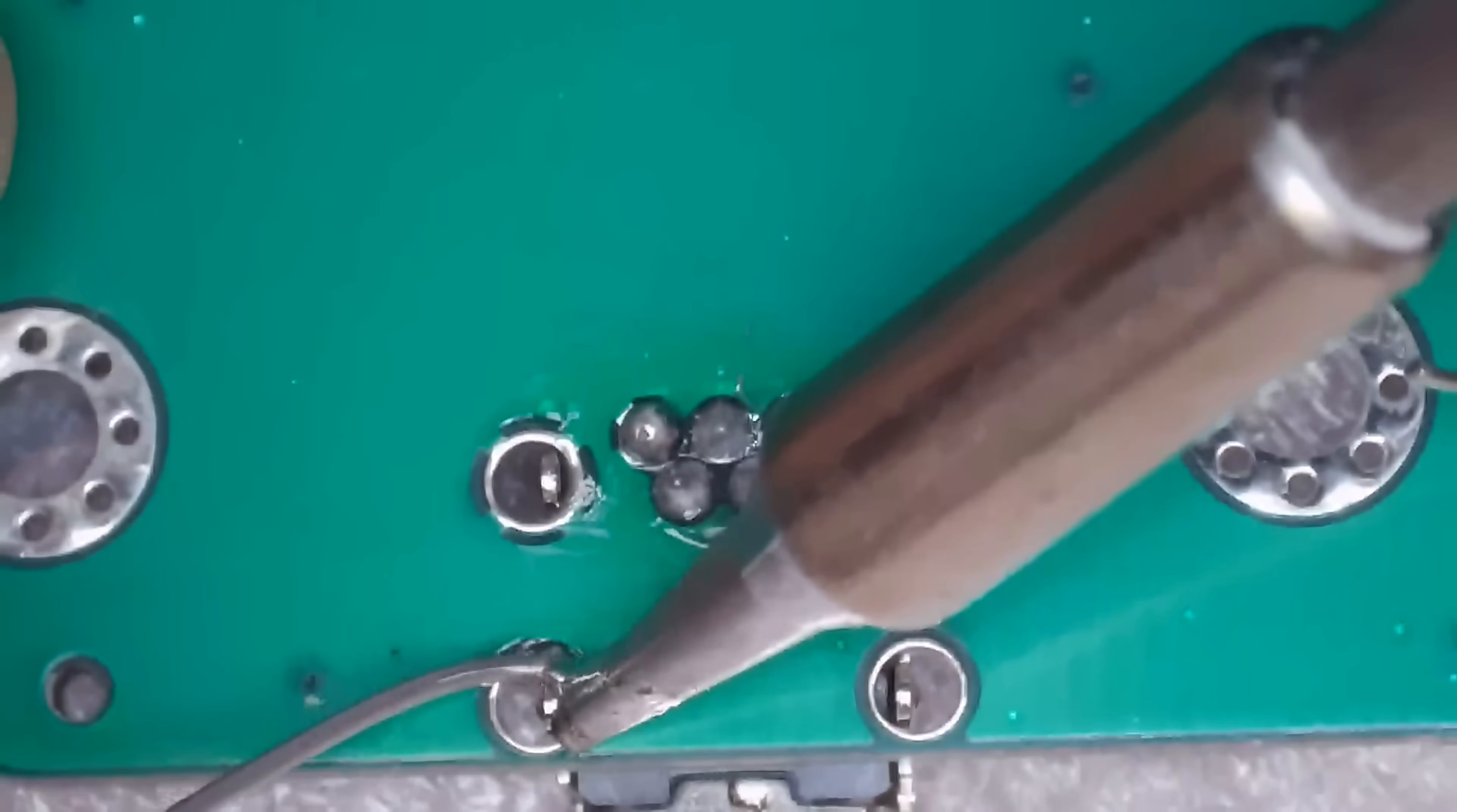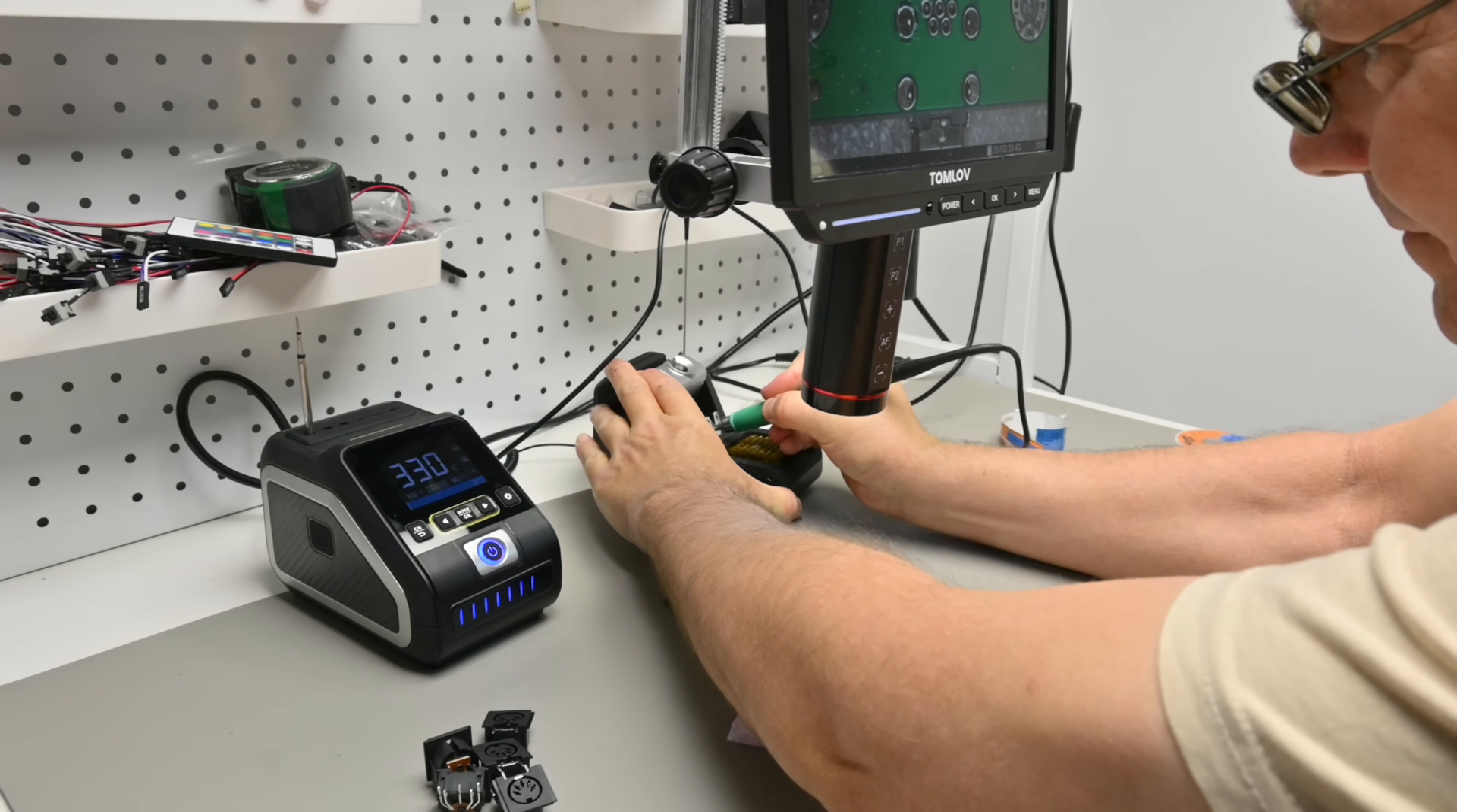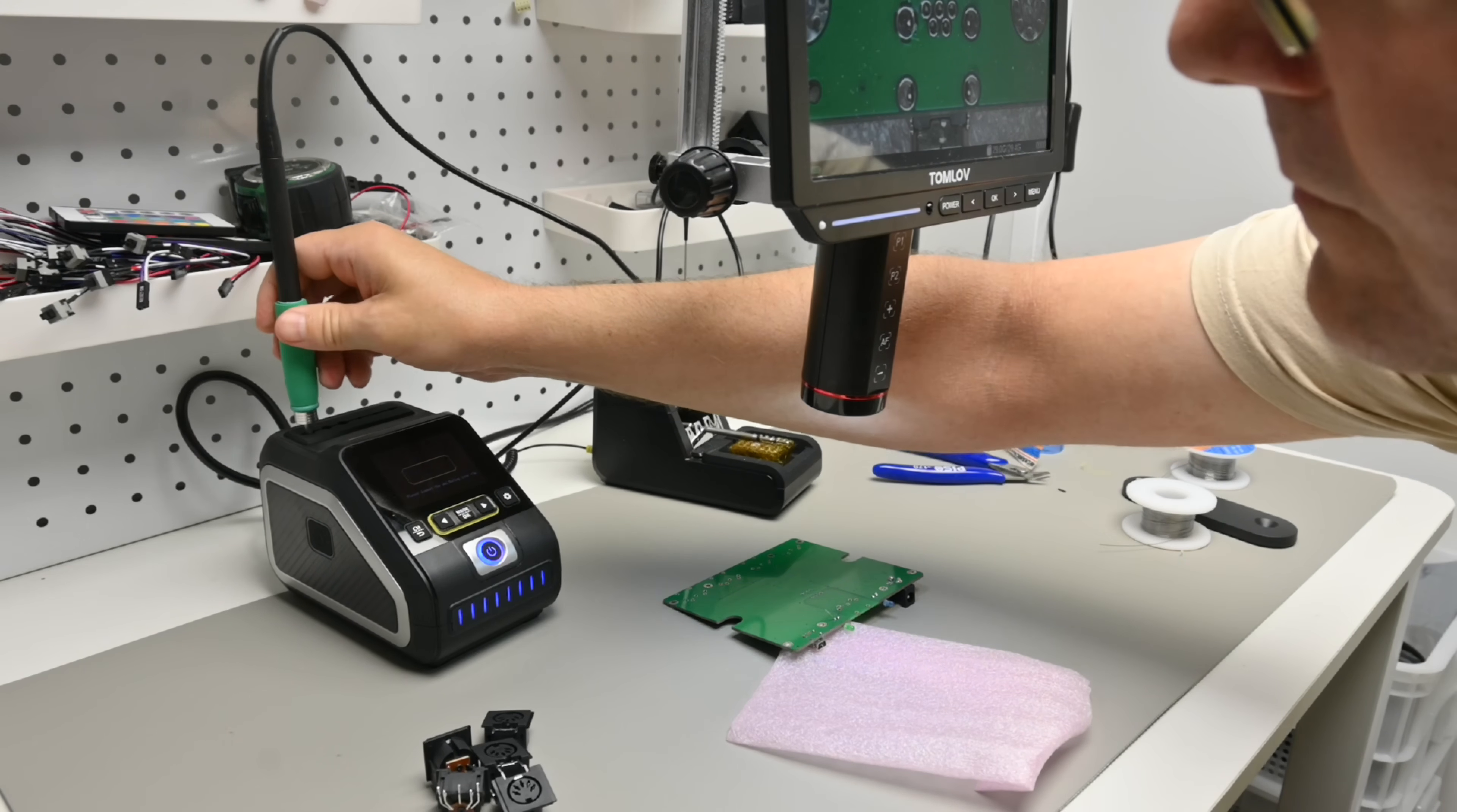And changing tips, well this is where this soldering station is really nifty because you can change tips while you are working without stopping what you're doing. The holder has some holes to help you remove the hot tip.